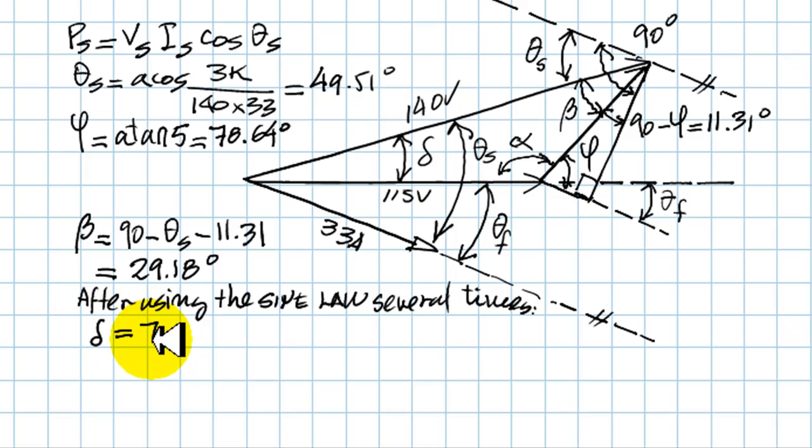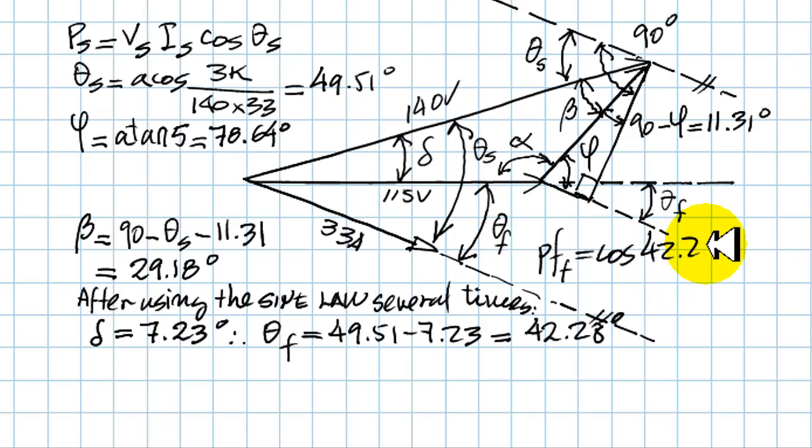Delta turns out to be 7.23 degrees. And we can subtract from theta s, 49.51, minus 7.23, and obtain what is almost our answer: 42.28 degrees. The cosine of that is the power factor at the factory. Cosine of 42.28, which is 0.74, inductive or lagging, depending on how you prefer to call that.